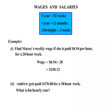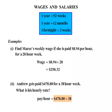The second question: Andrew gets paid $478.80 for a 38-hour week. What is his hourly rate? The hourly rate simply means how much pay is he getting per hour. So if he's getting $478.80 for the week and he's working 38 hours, this time we divide: $478.80 divided by 38, and we get $12.60 per hour.